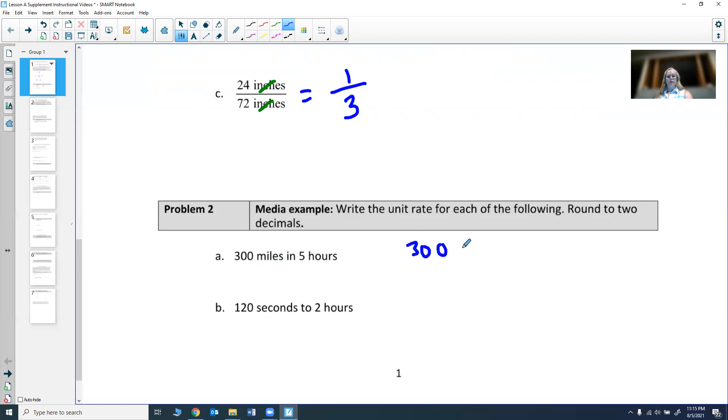Let's put the miles in the top, 300 miles over 5 hours. Now, in this case, 300 divided by 5, that goes into it 60 times.